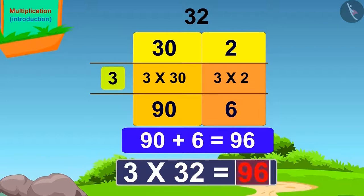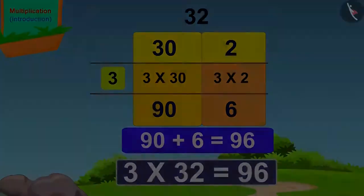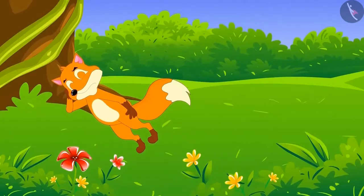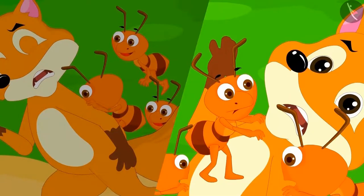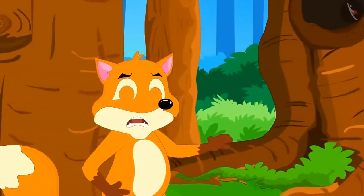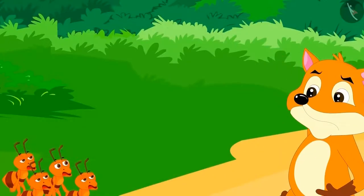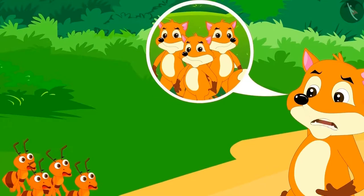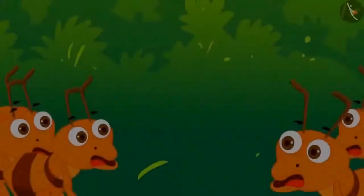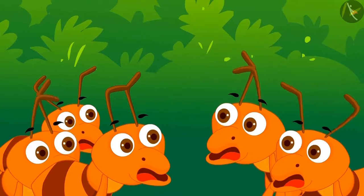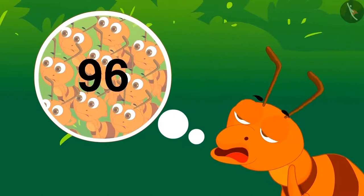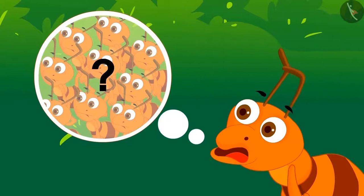There were a total of 96 ants. When the wolf fell asleep, the ants attacked him the whole night. Every group bit him severely. The wolf ran away from there in pain. But he told the ants that he would bring three more of his friends the next day. The ants got scared, but they decided to fight till the end with the wolves. Now they are thinking: if 96 ants were needed for one wolf, how many ants would they need to attack four wolves?